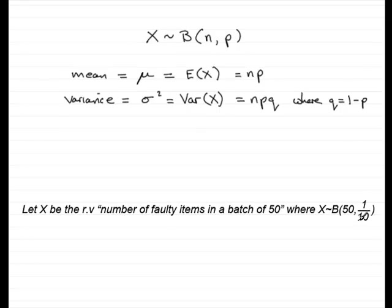So how many faulty items would I expect? Well, if 1 in 10 is faulty and I've got 50 items, I would have thought the answer was obviously going to be 5. But you can see that follows this rule here, because the mean number of faulty items would be E(X). What I would expect would be n times p, 50 times 1 tenth, and 50 times 1 tenth is going to be equal to 5. So you can see that the mean seems to be an obvious result.